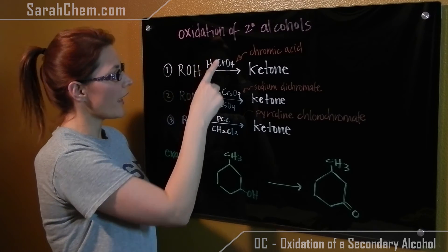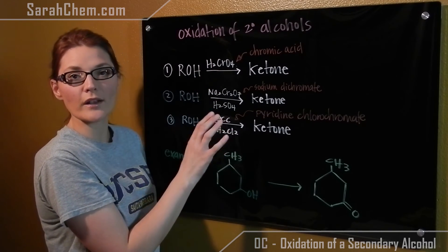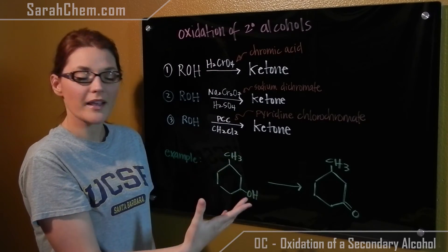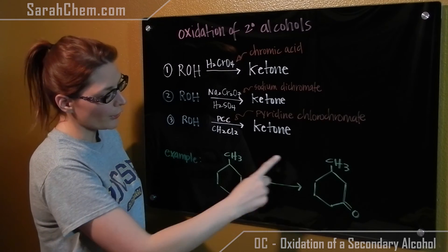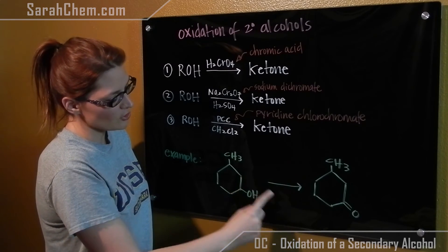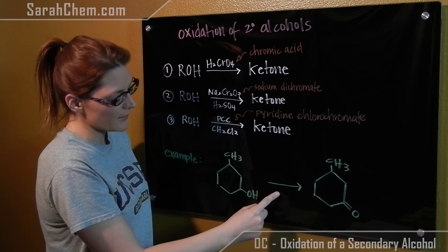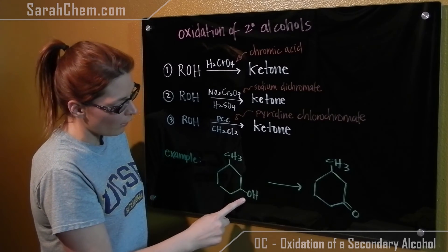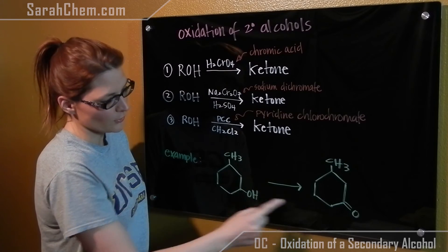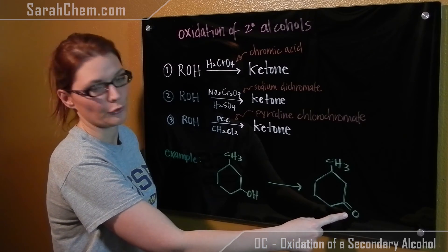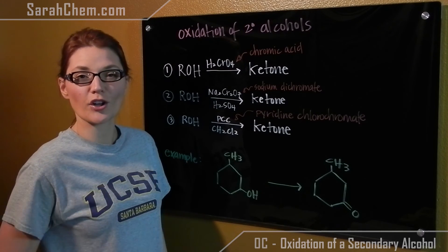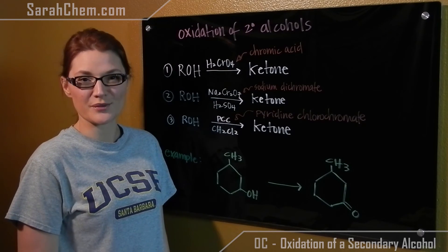So in any one of these cases, we will always get a ketone out. Basically, regardless of what the reagent is over this arrow, what will happen is your alcohol group will get turned into a ketone group. And that's pretty much all you have to know for these reactions.